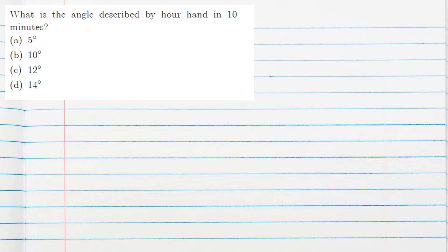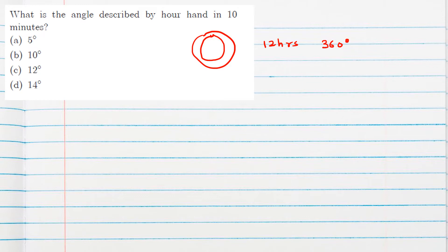The next question is: what is the angle described by the hour hand in 10 minutes? The hour hand completes one full circle (360 degrees) in 12 hours. So in one hour, it covers 360/12 = 30 degrees.